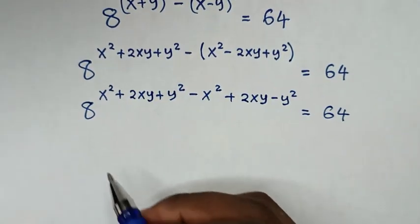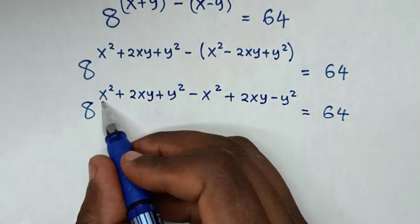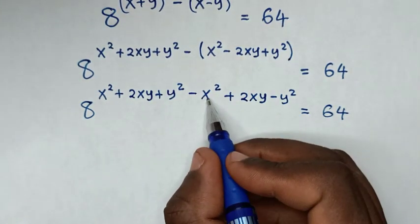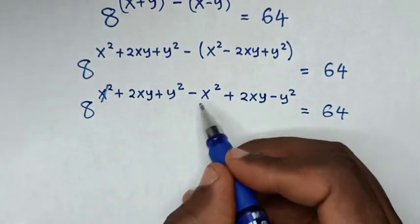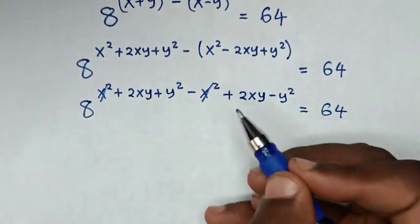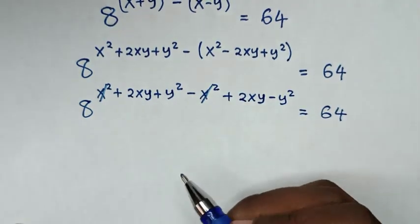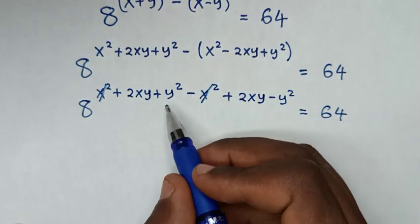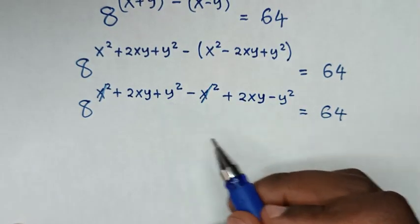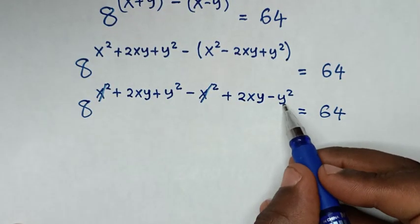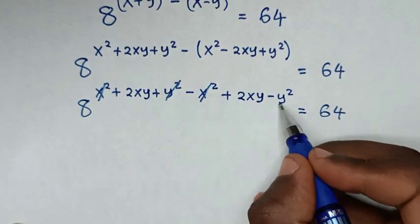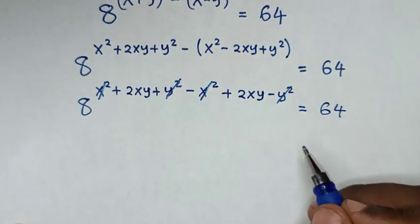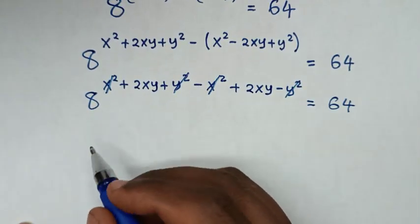Then from here, x² minus x² is 0, so this and this will cancel. And from here y² minus y² is 0, so this and this will also cancel.